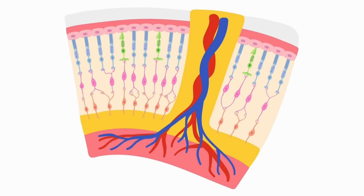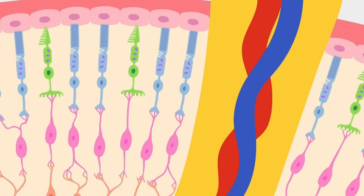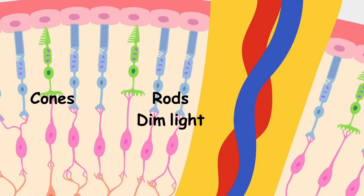The retina of the eye contains photosensitive cells, rods and cones. This is a cone cell and this is a rod cell. Rods are responsible for vision in dim light and cones are responsible for color vision.